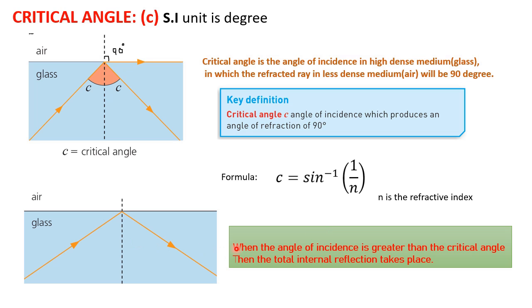Total internal reflection: when the angle of incidence is greater than the critical angle, total internal reflection takes place. When the angle of incidence exceeds the critical angle, no refraction occurs — all the rays are totally internally reflected.